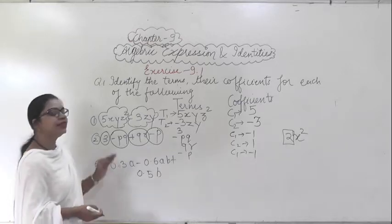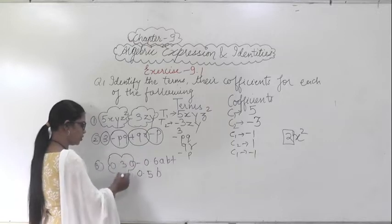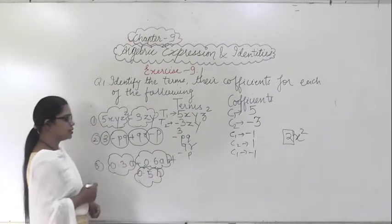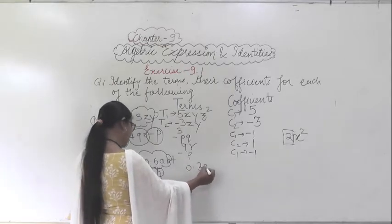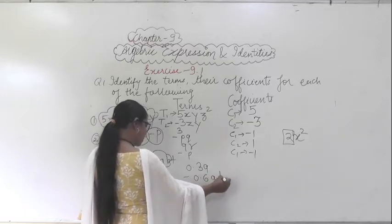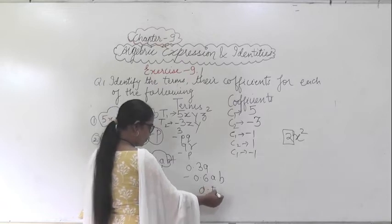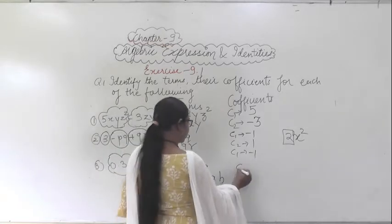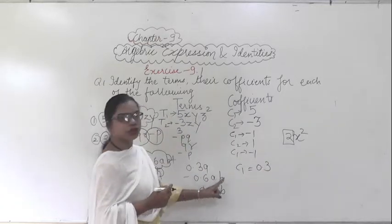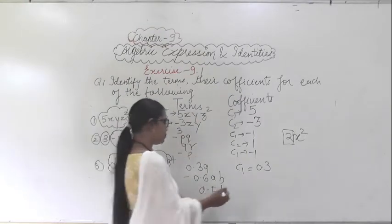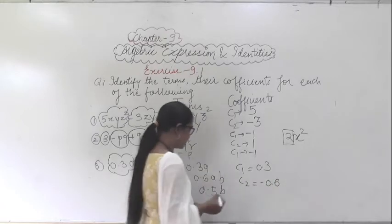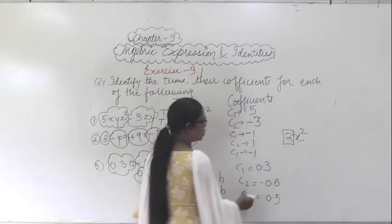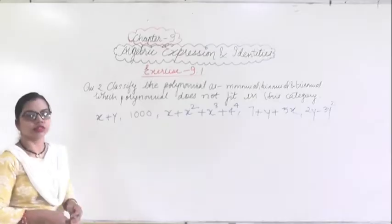In this portion, how many terms are there? We have 0.3a as the first term, minus 0.6ab as the second term, and plus 0.5b as the third term. So the terms are 0.3a, minus 0.6ab, and 0.5b. What is the coefficient of a? That is 0.3. The coefficient of ab is minus 0.6. And the coefficient of b is 0.5. You have to find out the terms and the coefficient.